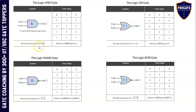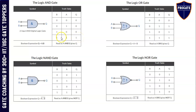Logical AND gate. We write it as Q is equal to A dot B, read as A and B. This is the symbol. If you see the truth table, if any one of the two inputs is zero, then the output will be zero. Output will be logic high only when each and every input is high.